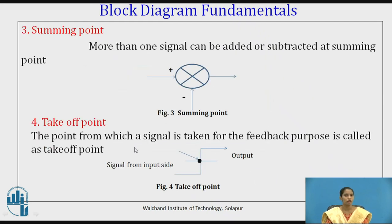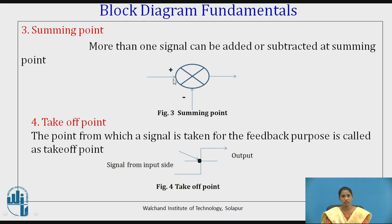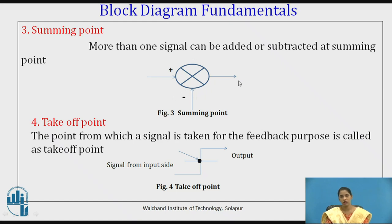Next is the summing point. The name itself indicates its function — it is a point where more than one signal can be added or subtracted. That point is known as a summing point. Figure 3 shows a summing point where three signals are present. One is a positive signal, one is negative, and one more signal. At the summing point, two, three, or more signals can be added or subtracted going outside the block.